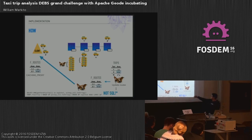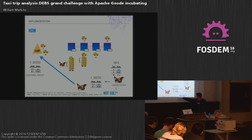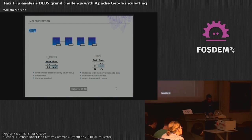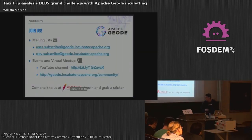We are performing some OQL queries — monitoring all the taxi trips and counting the average or the amount of fare trips. By that we get the top ten, and then we update a client. That's one of the queries the challenge requires us to implement, and we have the other two as well.